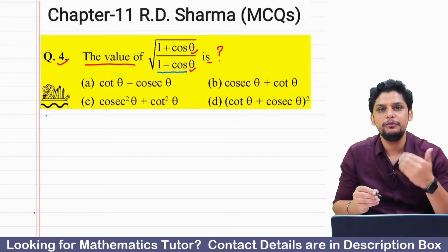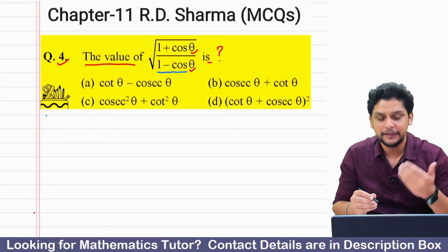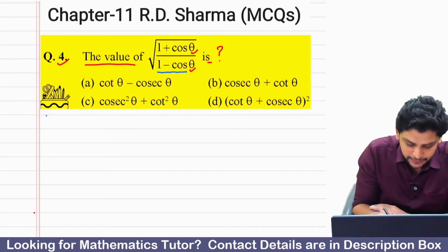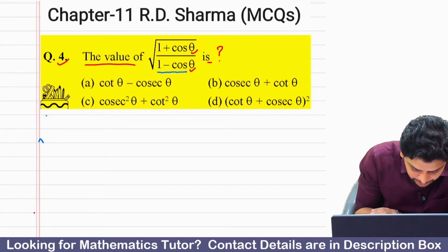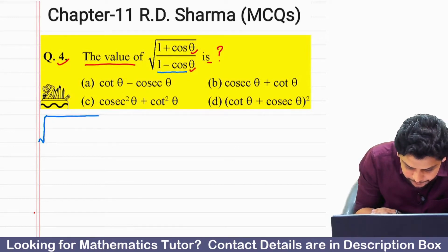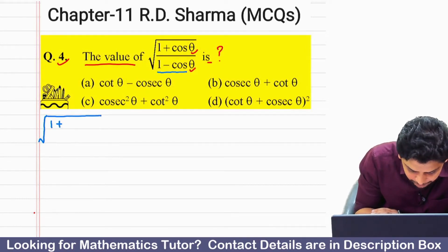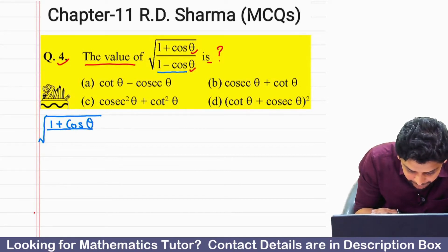So if you want to see that video, you can see it. Let's solve this question. First of all, we have to write this expression as (1 plus cos theta) divided by (1 minus cos theta).